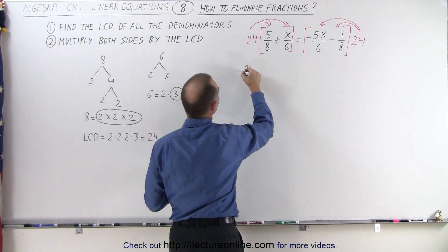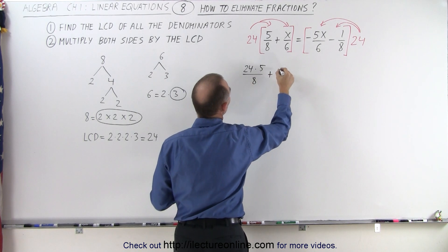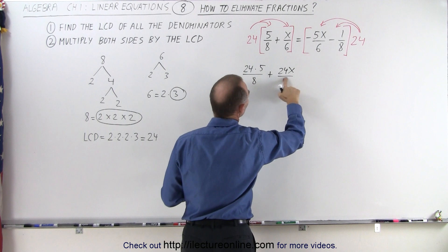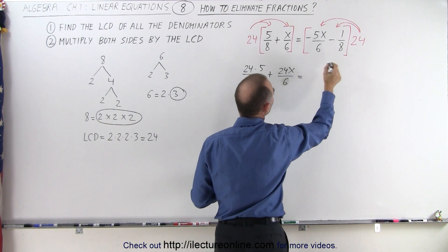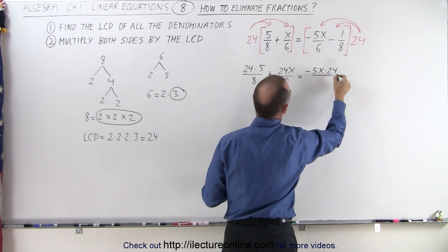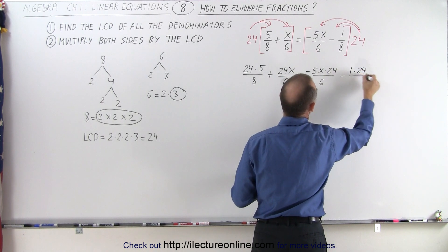This becomes 24 times 5 over 8 plus 24x over 6. On the right side, we get minus 5x times 24 over 6 and minus 1 times 24 over 8.